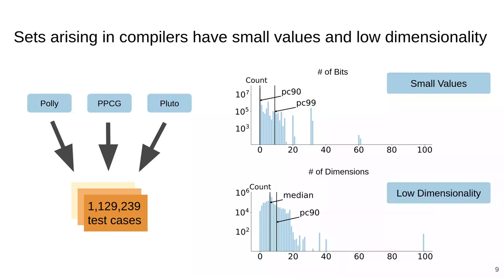The combination of small values and low dimensionality means that in the common case, we can represent the rows of the constraint matrix as simply vectors.